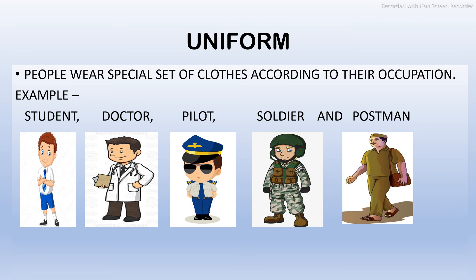Sometimes we call certain dresses a uniform. What is a uniform? When people wear a special set of clothes according to their occupation, those clothes are known as a uniform. For example, a student wears his school uniform, a doctor wears a white coat in hospital. Similarly, pilots, soldiers, and postmen also wear uniforms according to their occupation.